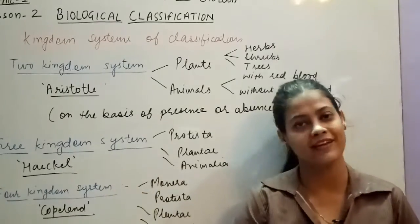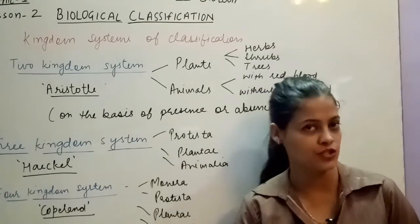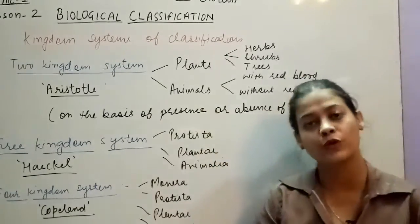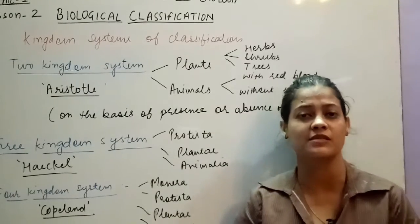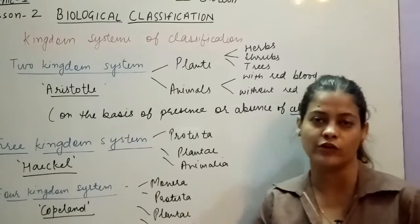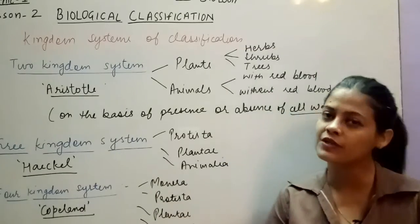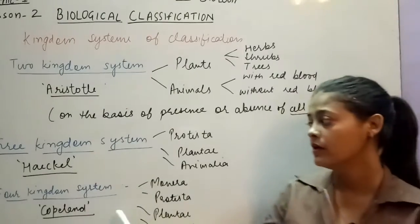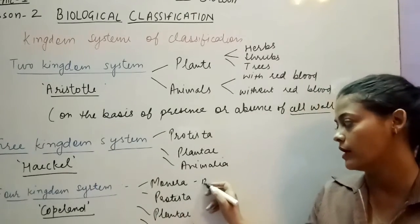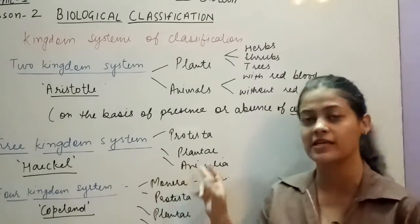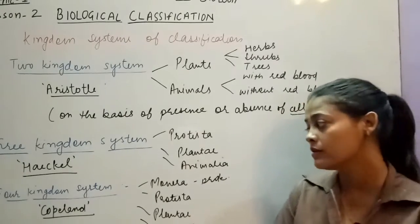Next is the three kingdom system of classification, given by Ernst Haeckel. He studied the two kingdom system's drawbacks and tried to overcome them by adding one more group: Protista. So now there were Plantae, Animalia, and Protista. However, even after adding Protista, prokaryotic organisms still could not be properly placed. Scientists understood that prokaryotic and eukaryotic organisms are different, but prokaryotes still didn't fit. So this was also rejected. Then came the four kingdom system of classification, given by Copeland, who added Monera — placing all prokaryotes in Monera. Now there was Monera, Protista, Plantae, and Animalia, but still many organisms were not properly placed.